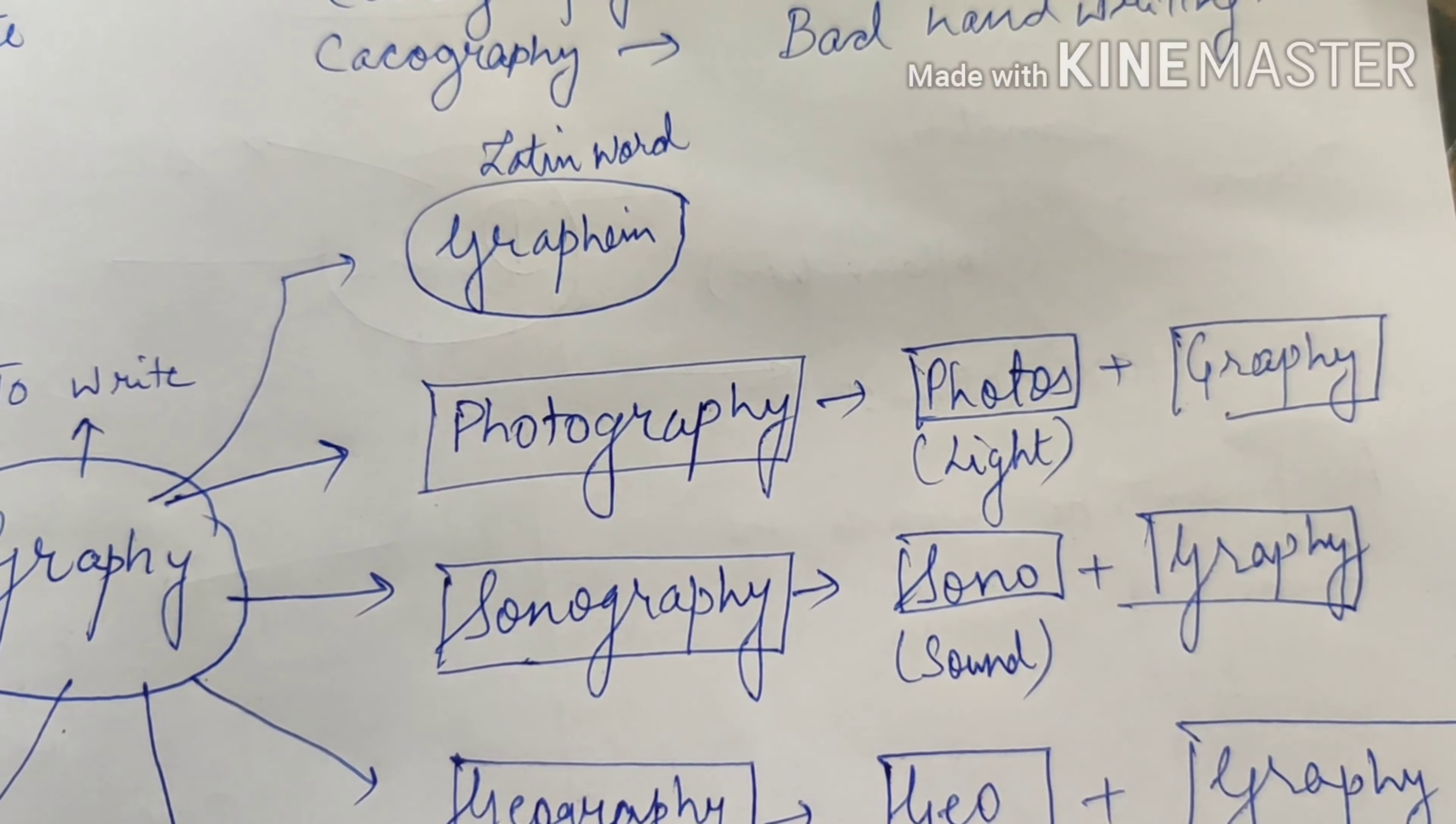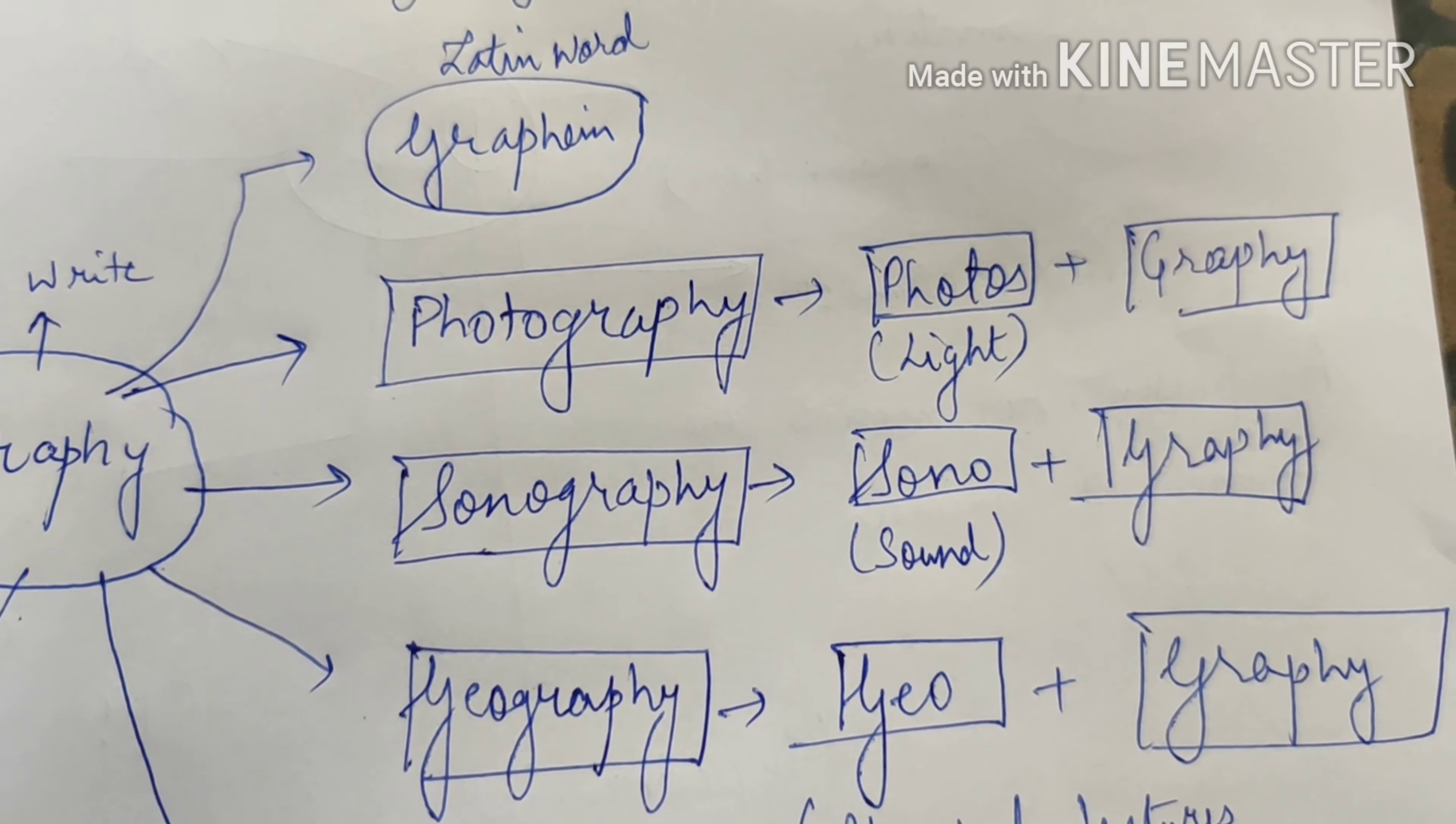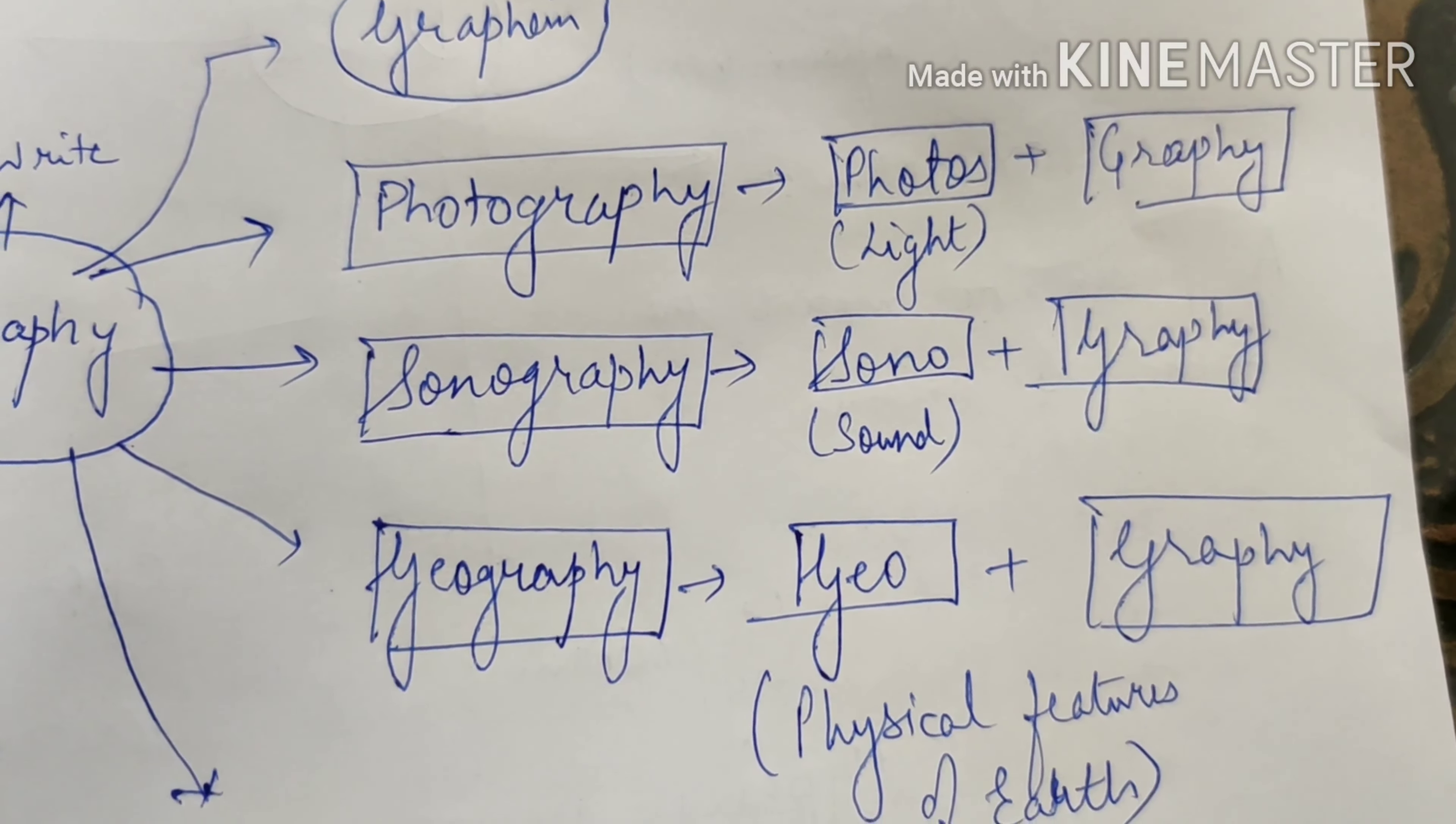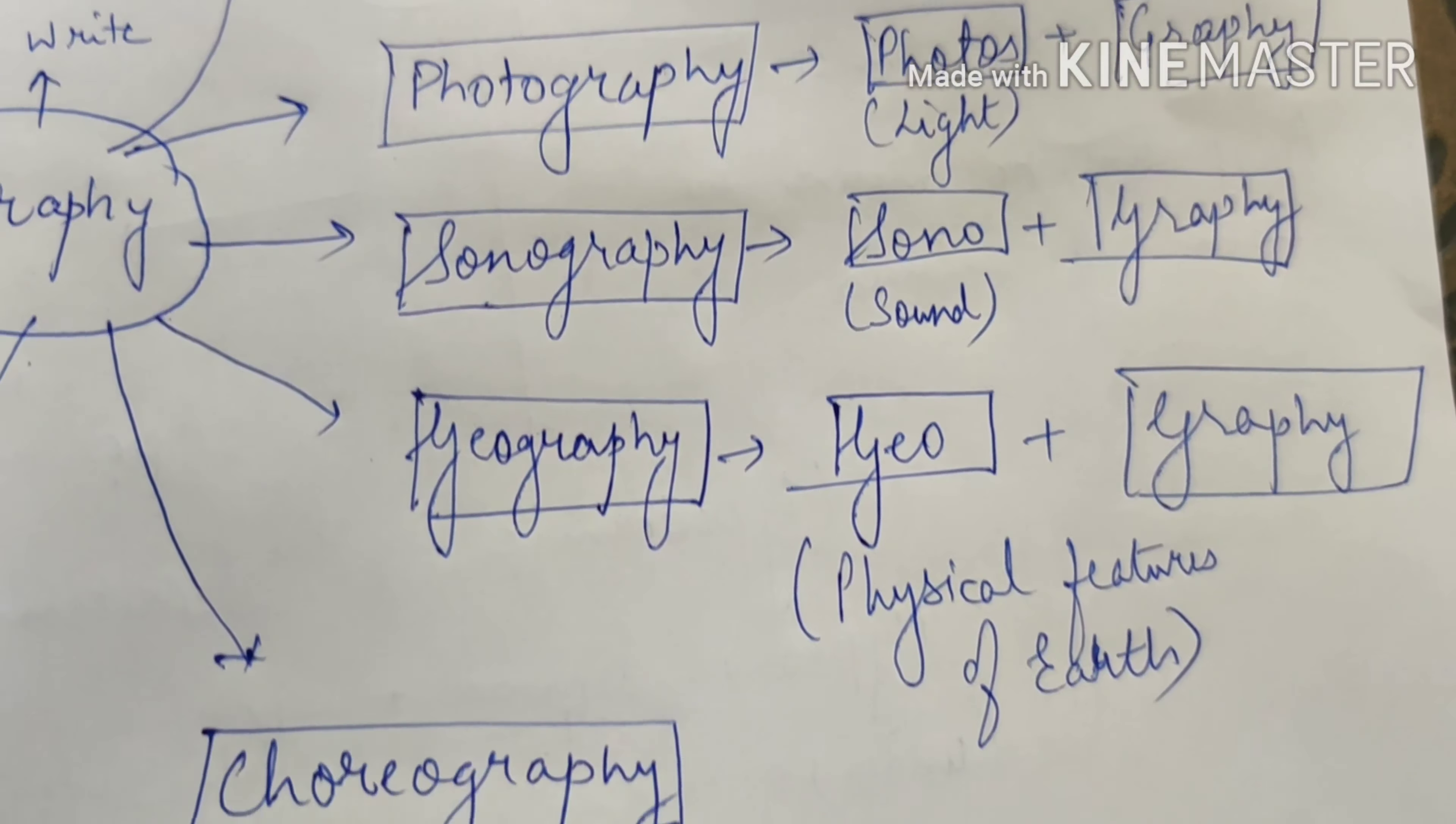Sonography. Sonography refers to writing with the help of sound. Sonos or sono refers to sound. Graphi refers to write. Geography. Geo again refers to physical features of earth. Graphi means to write. So when we try to write about the physical features of earth we refer to the subject of geography.